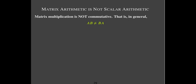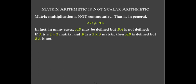Another big difference with matrix multiplication versus real numbers is that matrix multiplication is not commutative. A times B is almost never equal to B times A. In fact, A times B may be defined whereas B times A is not defined at all. Let's do a little review.